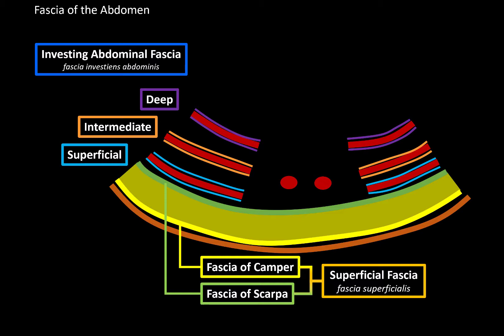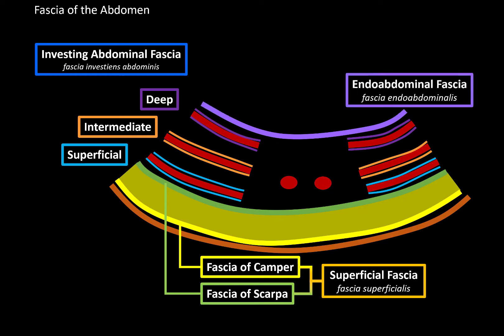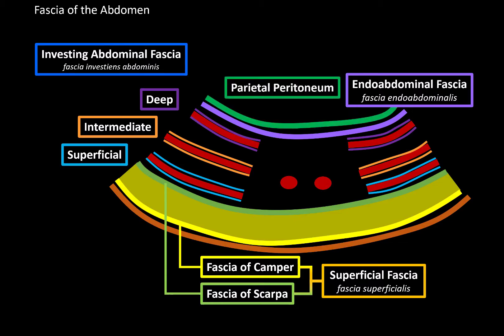Now, underneath the deep investing abdominal fascia, that's where you'll find the third fascia we're going to talk about, called the endo-abdominal fascia. And just underneath the endo-abdominal fascia, that's where you'll find the parietal peritoneum, which covers all the organs from the inner surface of the abdominal cavity.